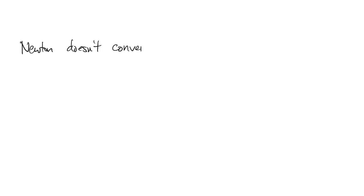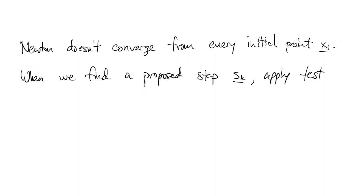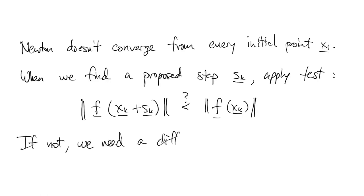As we saw in one dimension, Newton doesn't converge from every starting point, and it's even worse in n dimensions. So if we propose a new step by whatever method, we're going to test the norm of the residual — did it get smaller if we take that step? If it doesn't, we need some way to come up with a different step, and there are various approaches to this.